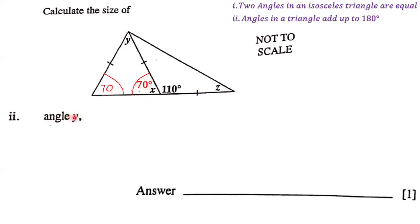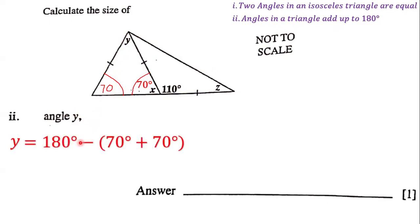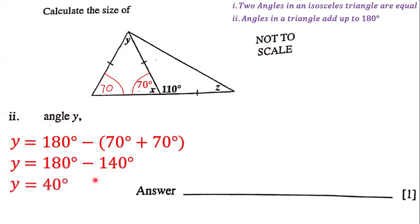Our goal is to determine the size of Y. We know that two of the angles are 70 degrees each. Since angles in a triangle add up to 180 degrees, we first add 70 and 70, which gives us 140. Then we subtract: 180 minus 140, and we get that Y is equal to 40 degrees. So the size of angle Y is 40 degrees.